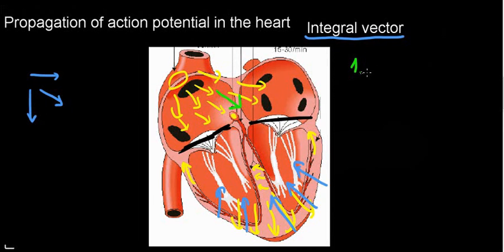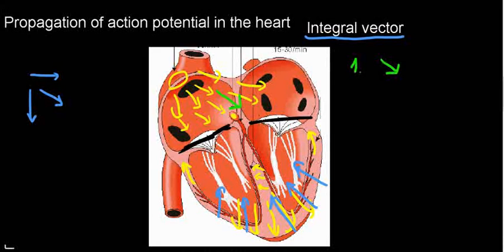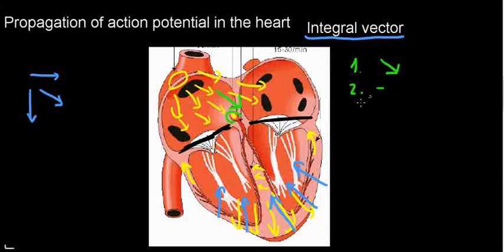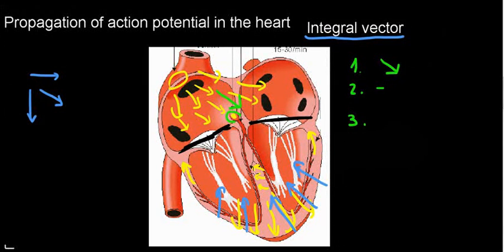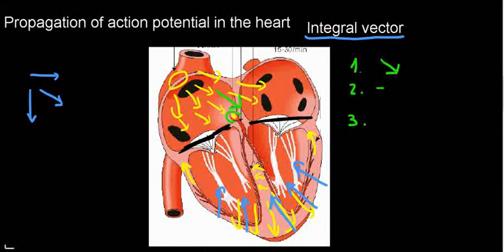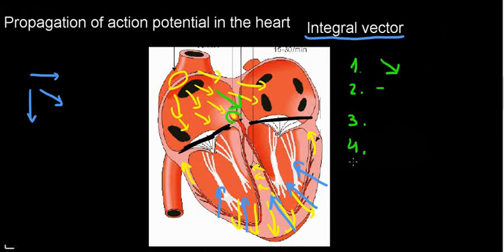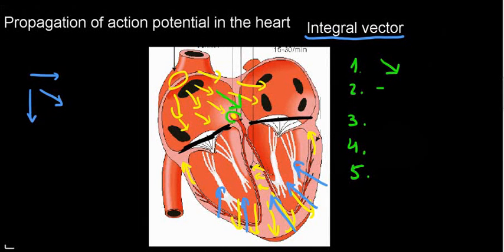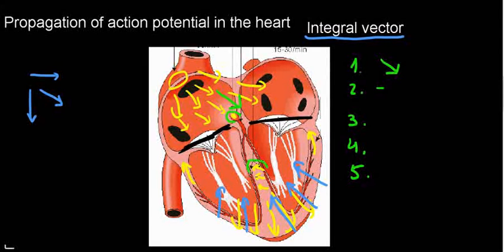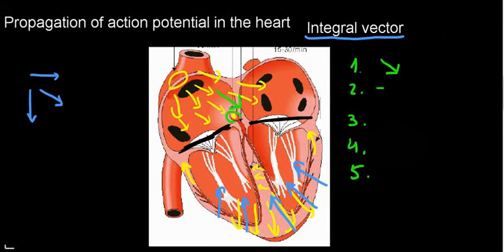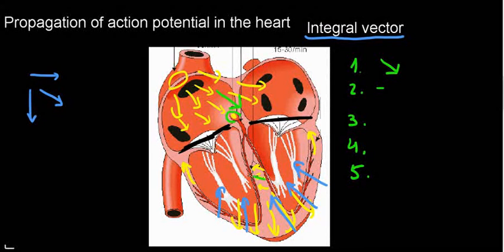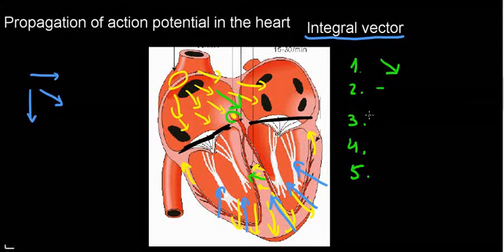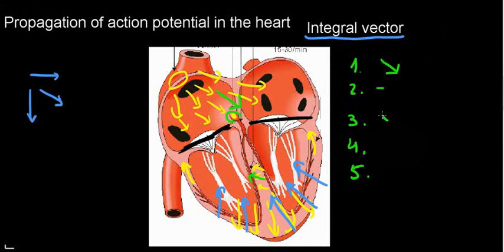Now we have the AV node — I don't really get much of anything. The third electrical event, and the fourth and fifth, are all going to be for the ventricles. The first electrical event of the ventricles is the depolarization of the septal tissue, which is going to read something along these lines — a very small magnitude compared to the first one because it's a very small tissue.